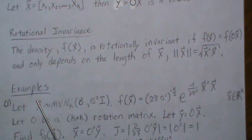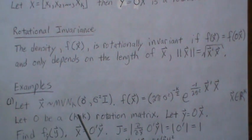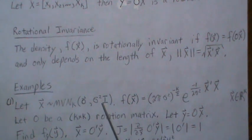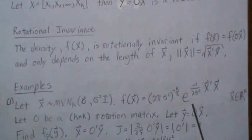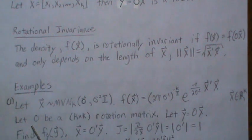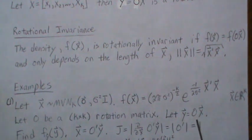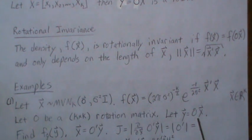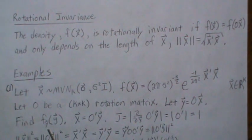So let's go through some examples. First example, let X be multivariate normal K dimensions, mean zero, variance sigma times I, so all the components are independent. The density is written like this. Let O be a K by K rotation matrix and let Y be O times X. Let's find the density of Y. To do this we have to back solve for X and then we take the Jacobian, which is the partial derivatives. It turns out to be just the rotation matrix derivative, which is one.